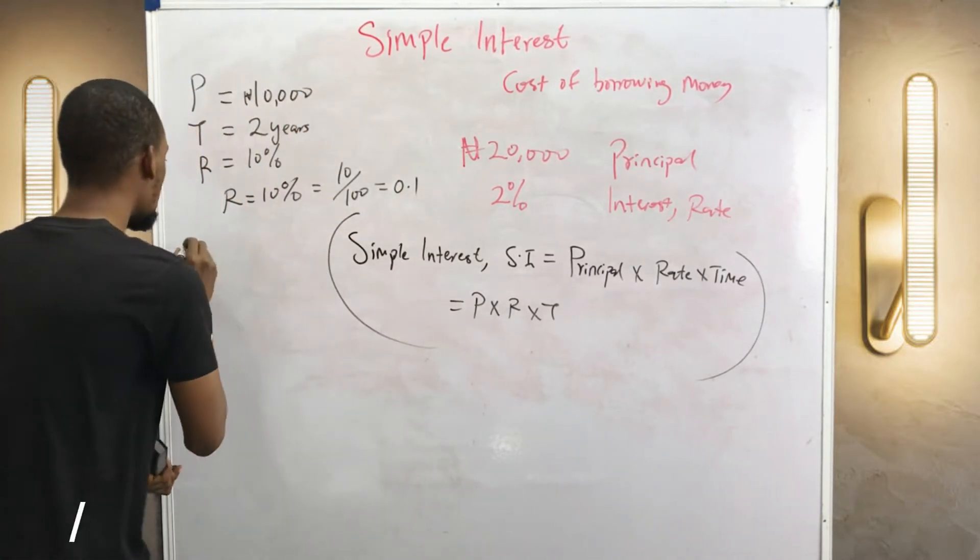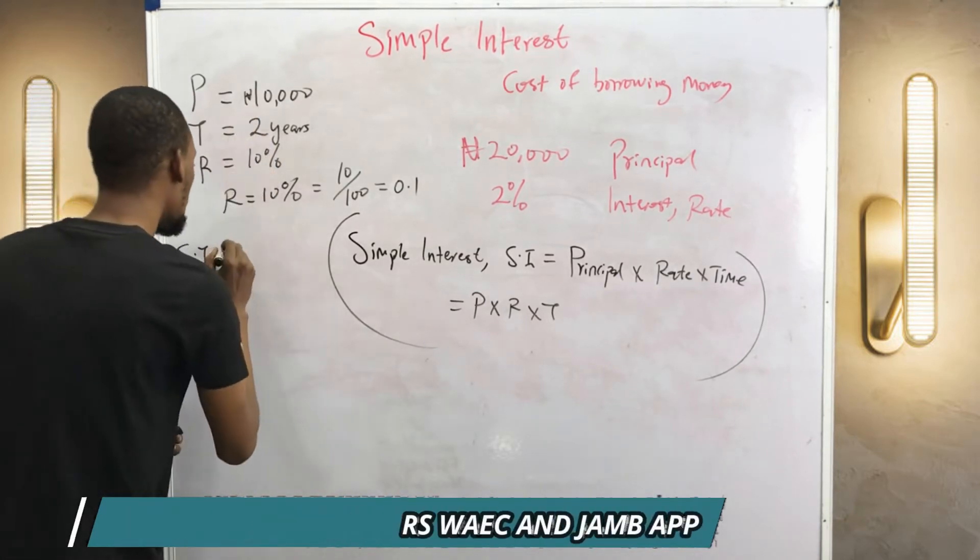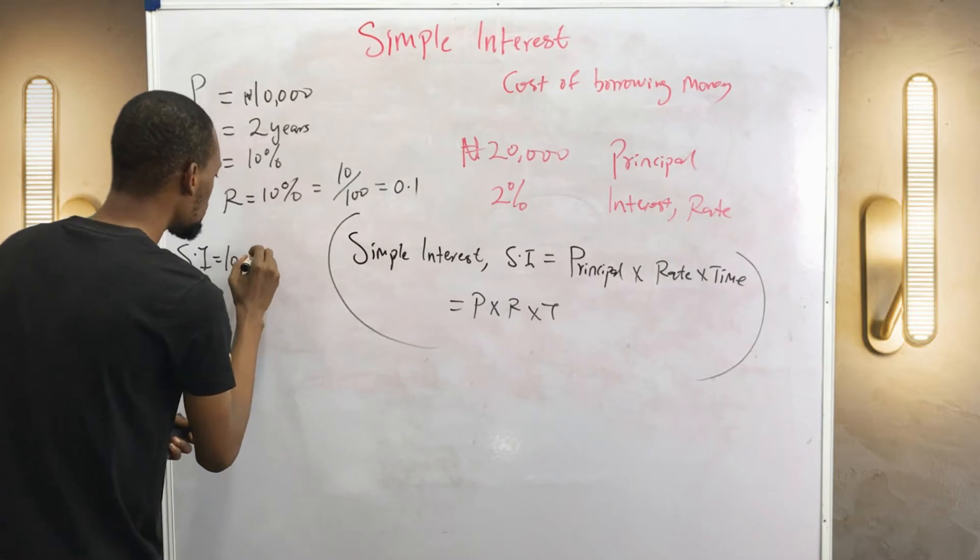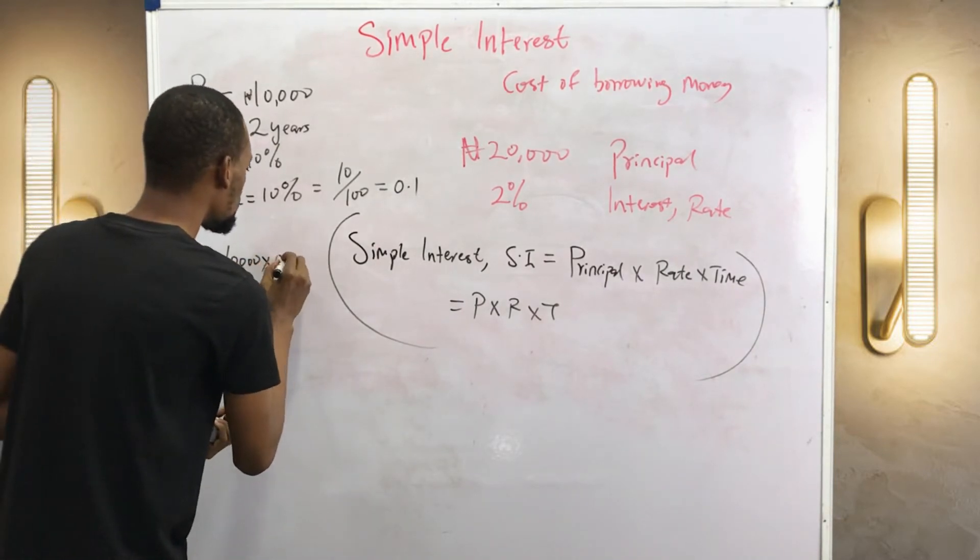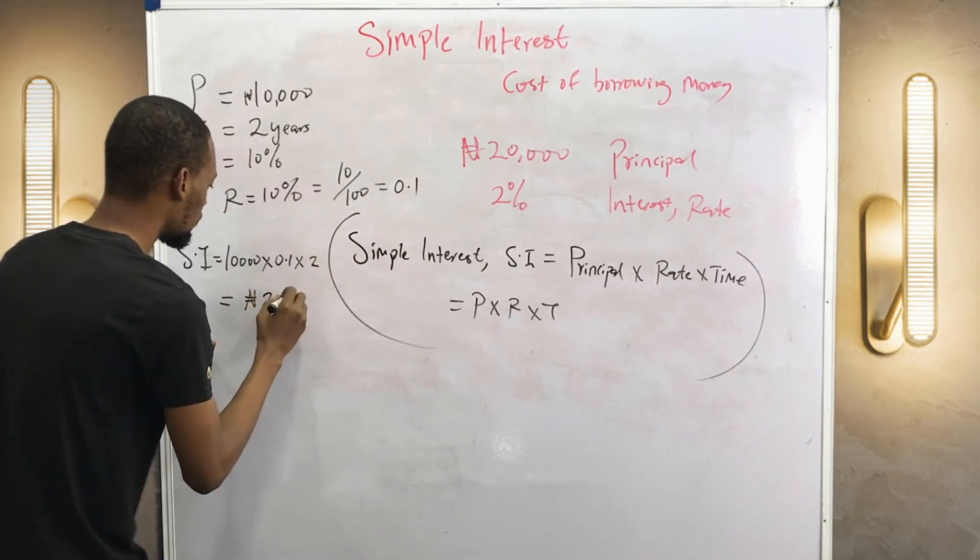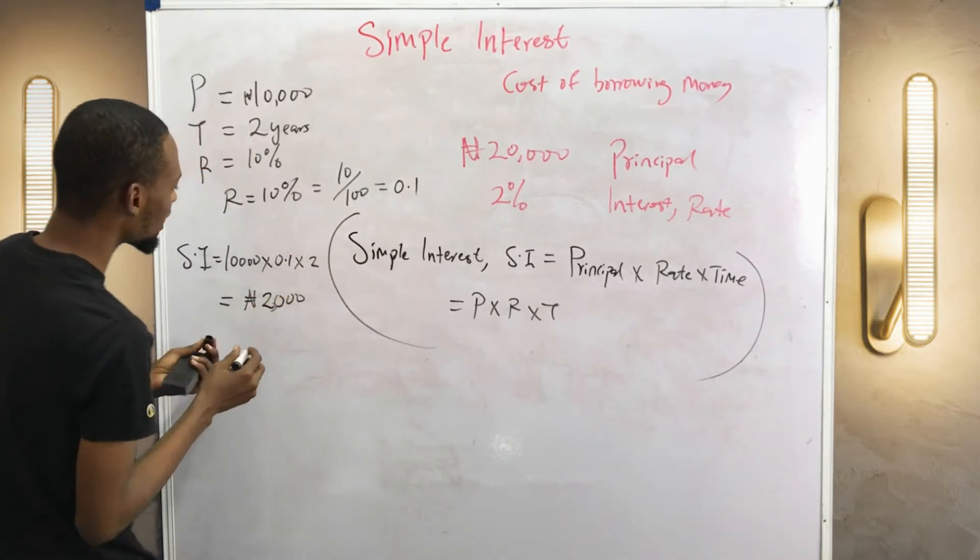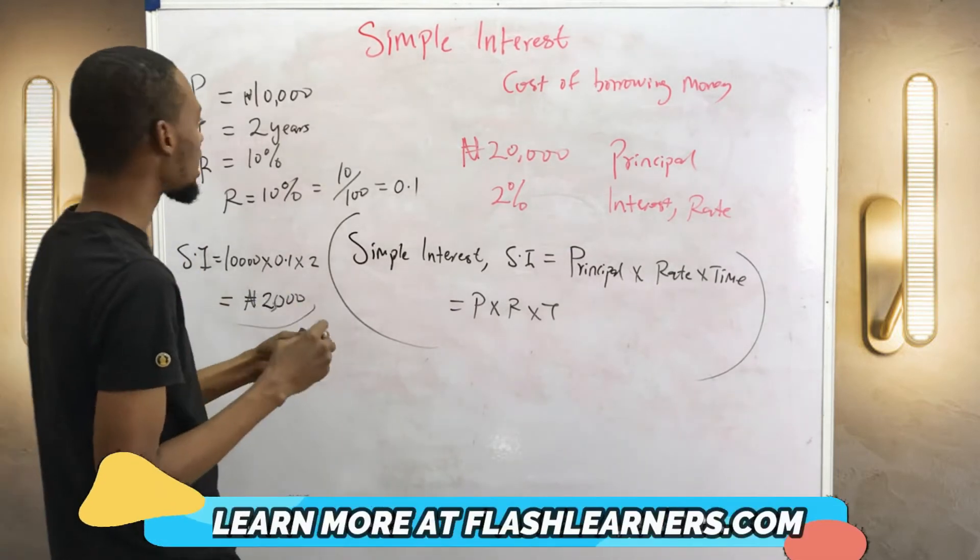So the interest or simple interest is simply 10,000 which is your principal times rate which is 0.1 times time which is 2, giving you 2,000 naira. So this is the interest you are paying. Let's look at another question.